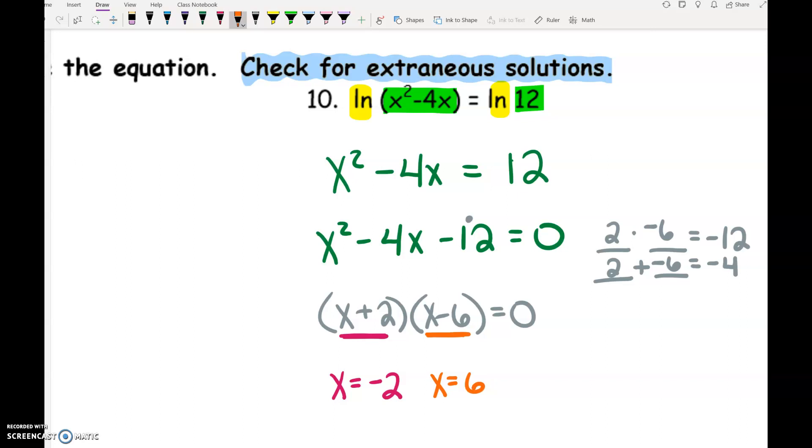This especially is where you need to check your solutions to make sure that neither of these create a negative in the log. You don't have to worry about the right side. That's ln of 12. But if I do negative 2 squared, that'd be positive 4. Negative 4 times negative 2, that'd be a positive. A positive and a positive, we're good. So this answer is good.